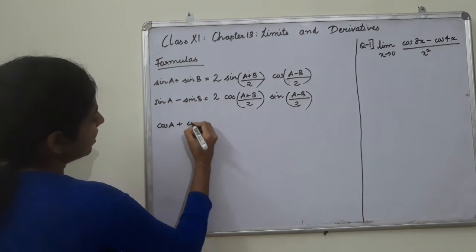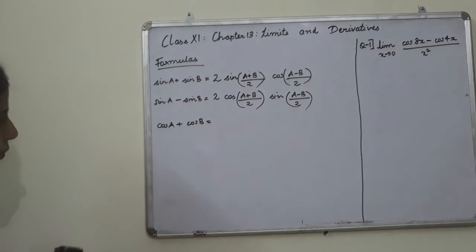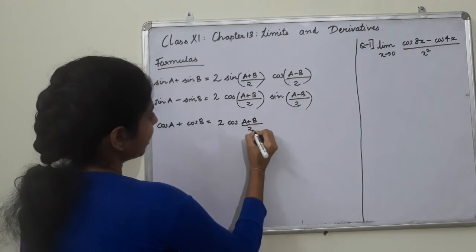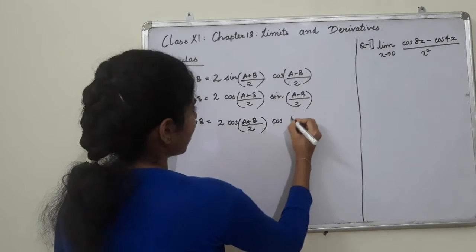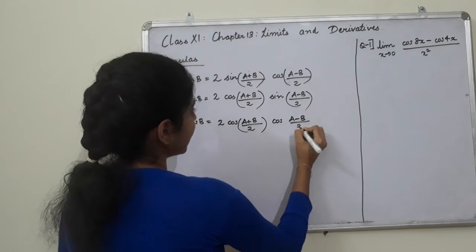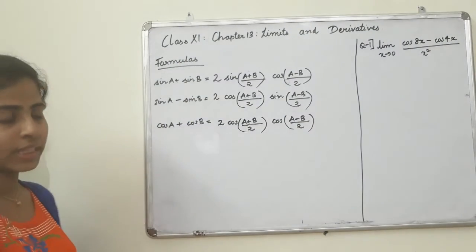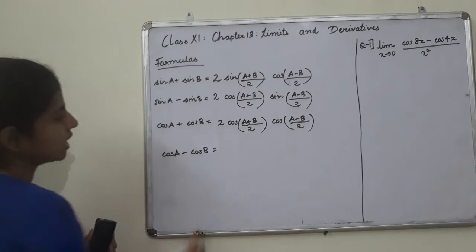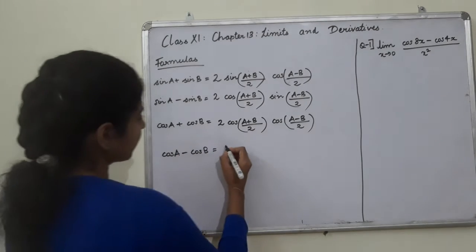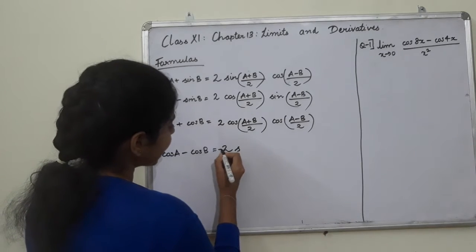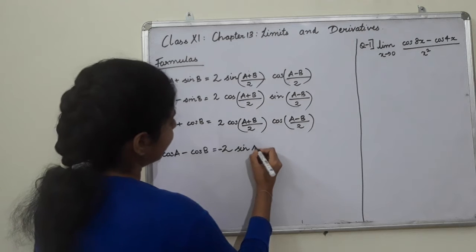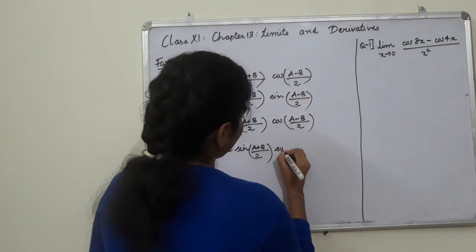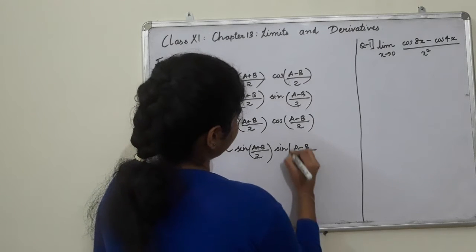The third formula: cos A plus cos B is equal to 2 cos((A plus B)/2) cos((A minus B)/2). The fourth formula: cos A minus cos B is equal to negative 2 sin((A plus B)/2) sin((A minus B)/2).